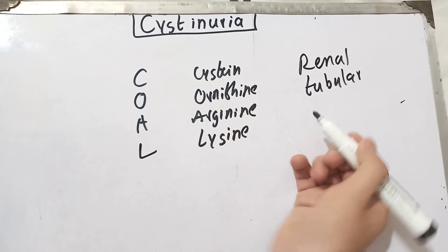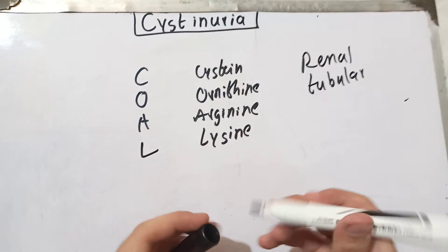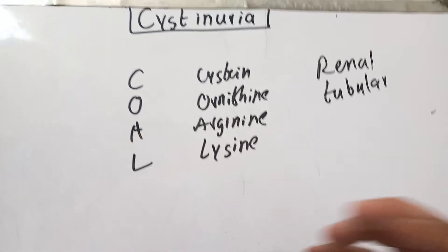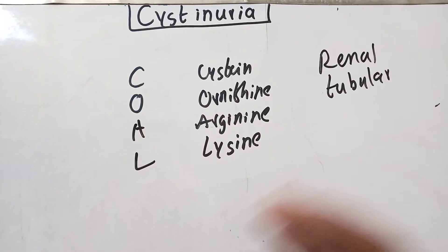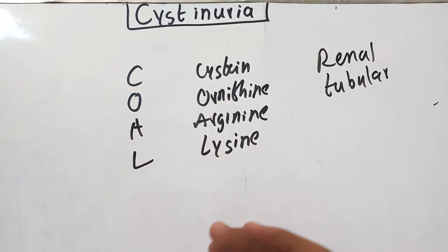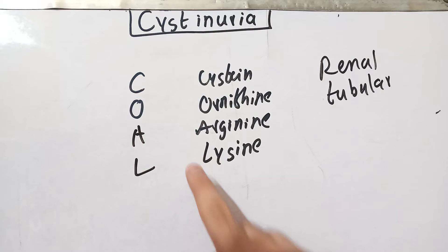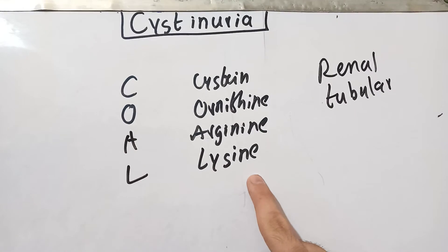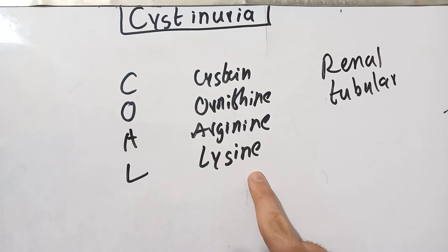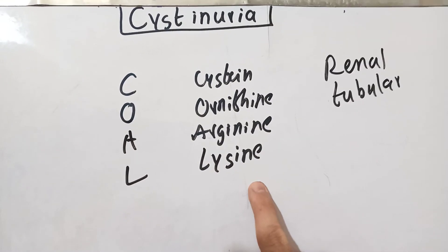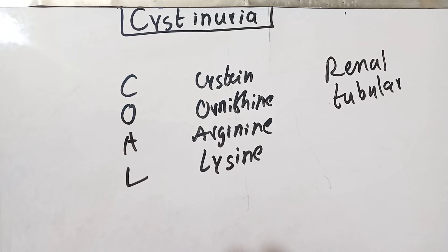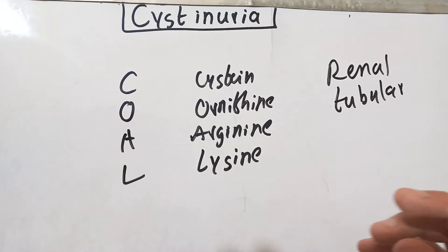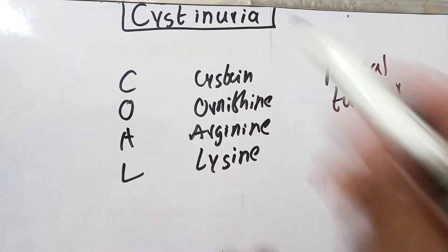When there is a defect in this transporter, all these amino acids are not reabsorbed from the renal tubules and are instead excreted in urine. This results in the manifestation of the disease called cystinuria.